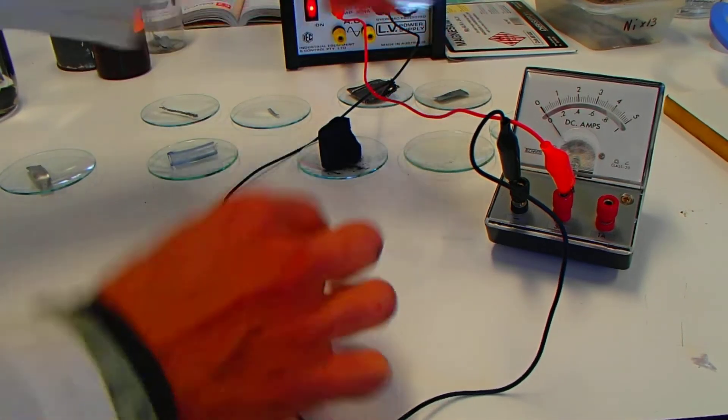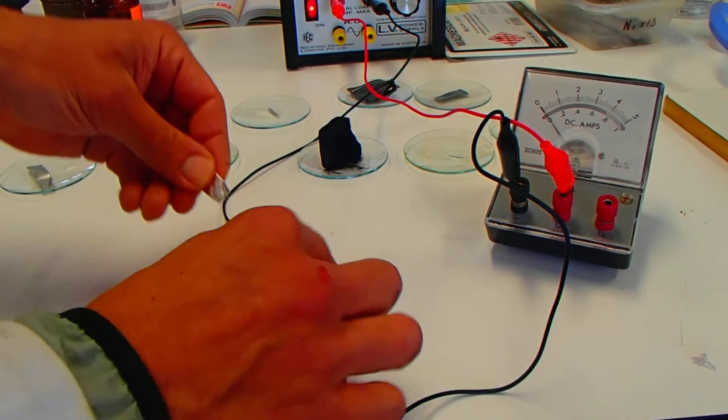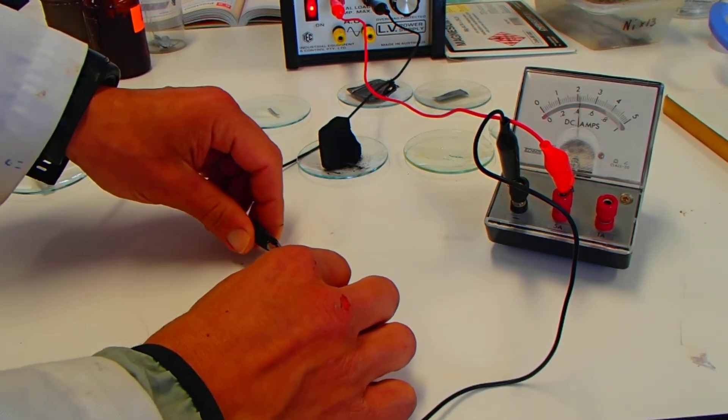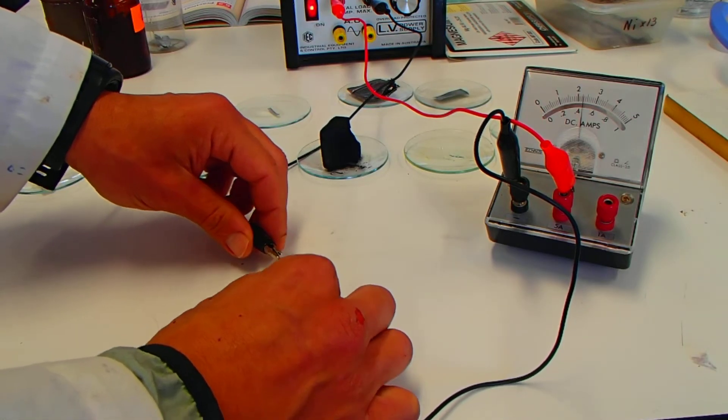Let's see if we can get a current passing through the aluminum. I'm just going to fold it up so we have a little bit more grip. Put that one on there. And yes, we see we have some current being passed through the aluminum sample there.